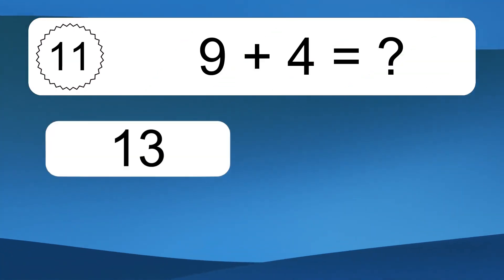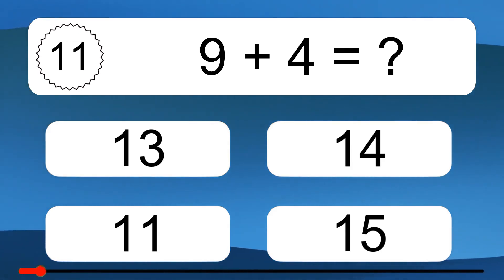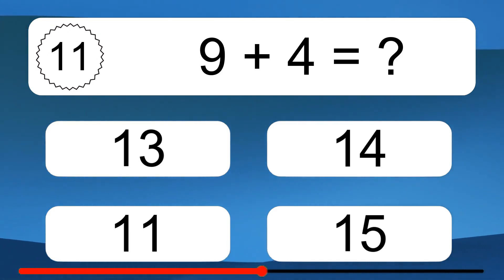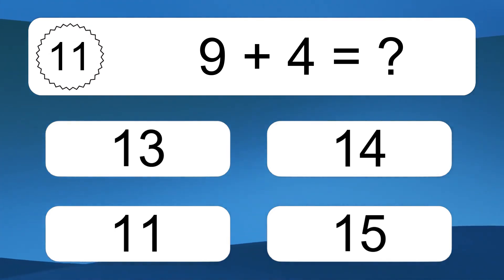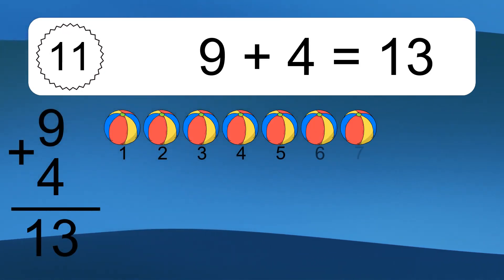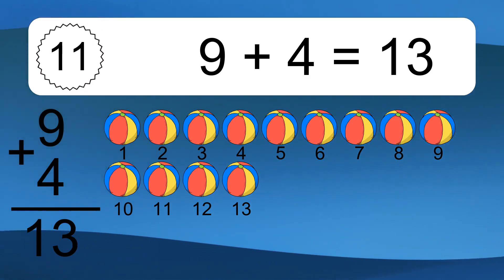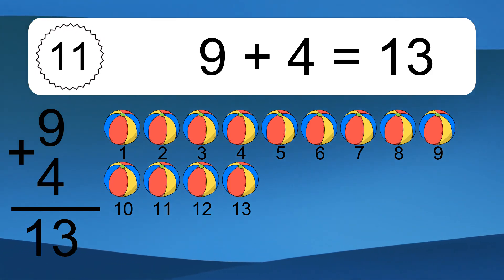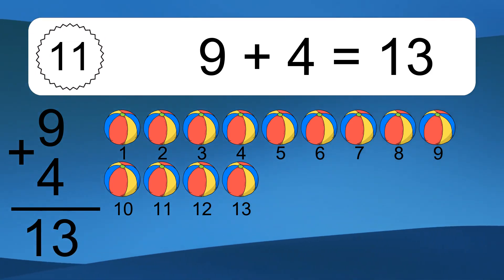9 plus 4 equals what? 9 plus 4 equals 13. Let's count it: 1, 2, 3, 4, 5, 6, 7, 8, 9, 10, 11, 12, 13.